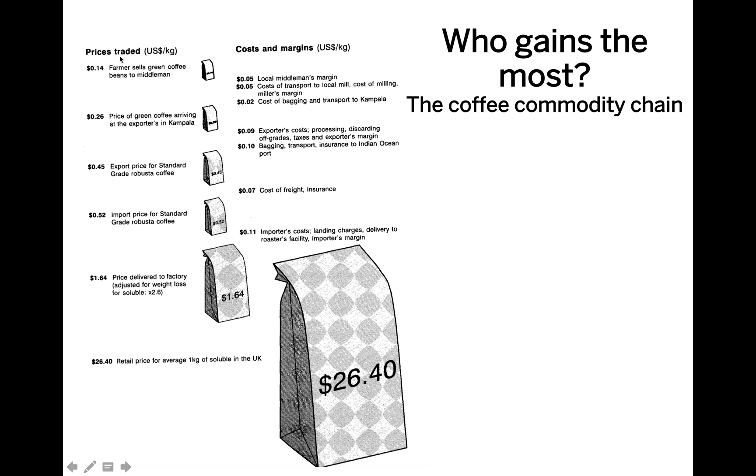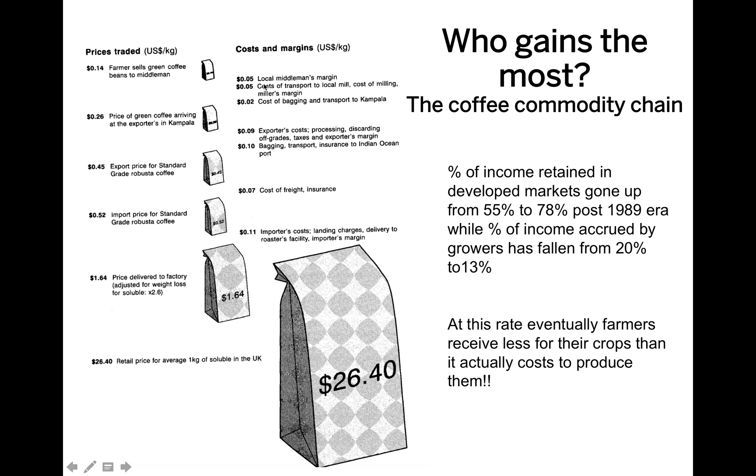You can see how the value is added in the commodity chain and who gains the most in this chain. We know who is taking the most of the cost and margins of benefit. The percent of income retaining these markets has gone up from 55% to 70%, while the percent of income gained by the growers of these beans has actually fallen from 20% to 13%. In essence, the farmers who are actually growing the coffee are receiving less for their crops than what it actually costs to produce them eventually at this rate.